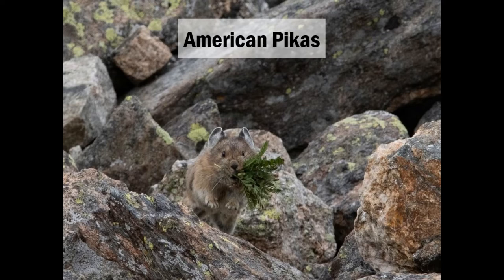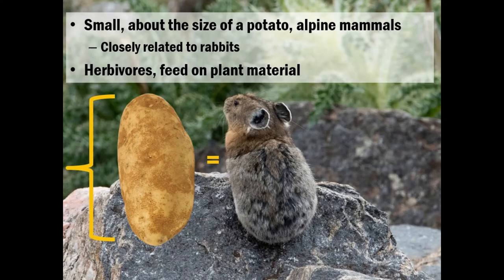Hi everyone, I'm Holly. I'm going to give you a little bit of a background on the American pika. Pikas are small — they're about the size of a potato, as you can see in this diagram. They're alpine mammals, so they usually thrive at elevations about 9,000 feet and above. They weigh usually about 100 grams, which is about three and a half ounces. They are closely related to rabbits — that's their closest relative. And like Valerie mentioned, they are herbivores, so they feed on plant material, typically grasses and forbs.